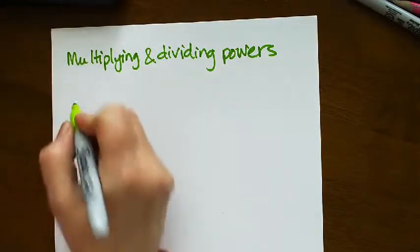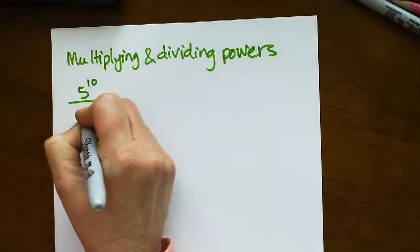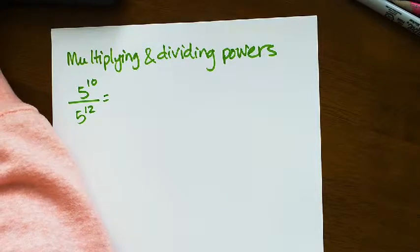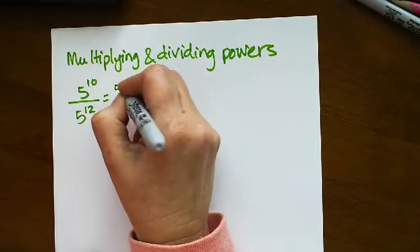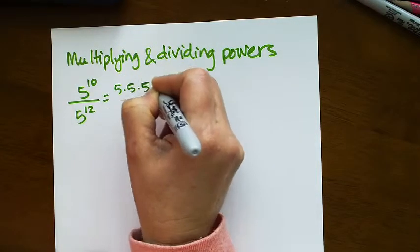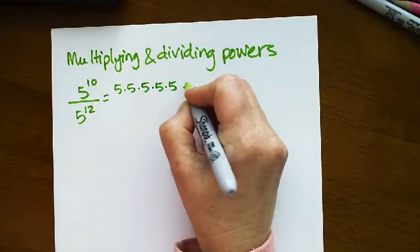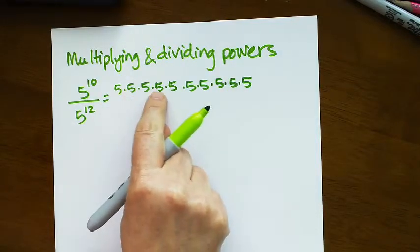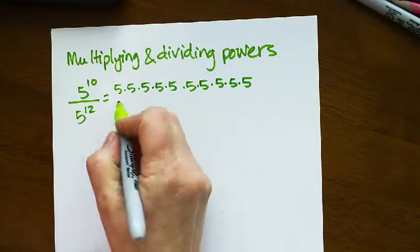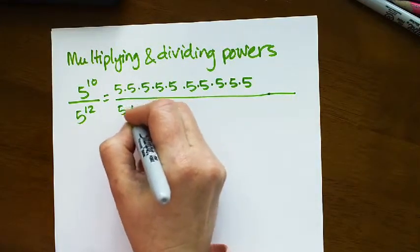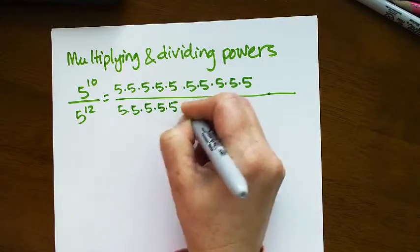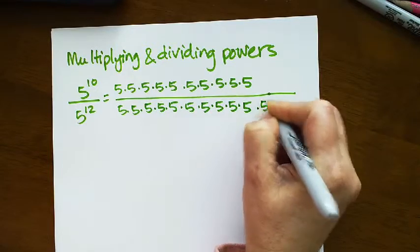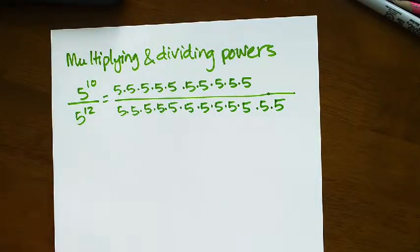So the first one I got was 5 to the 10th divided by 5 to the 12th. Well, 5 to the 10th is 5 times itself 10 times. 5 to the 12th is 5 times itself.